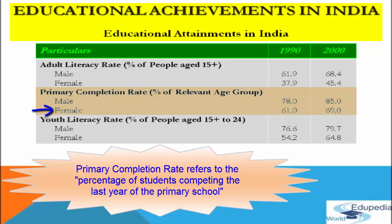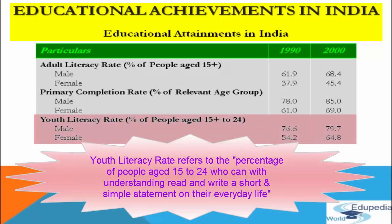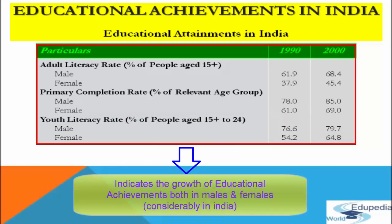In the case of females, the primary completion rate increased from 61% in 1990 to 69% in 2000. Youth literacy rate is the percentage of people aged 15 to 24 who can read and write a short simple statement with understanding. For males, there was a marginal increase from 76.6% to 79.7% in 2000. For females, the youth literacy rate increased from 54.2% in 1990 to 64.8% in 2000. From this data, educational achievement is seen to be growing considerably for both males and females in India.